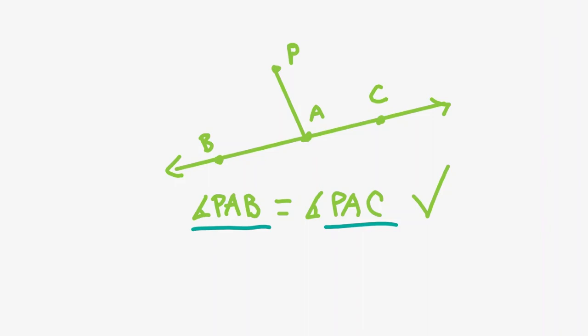The added signs of directed angles prevents the case when B and C are on different sides of AP, and mod 180 allows us to handle different permutations of A, B, and C. Let's now take a look at another interesting application of directed angles.